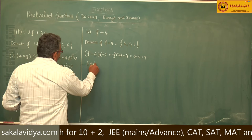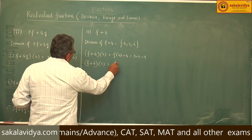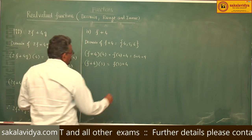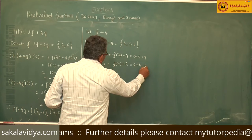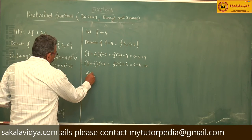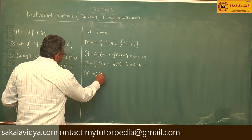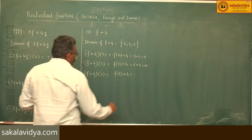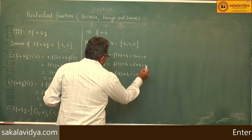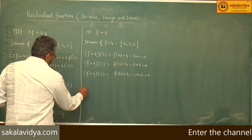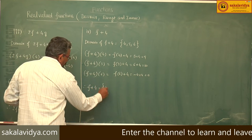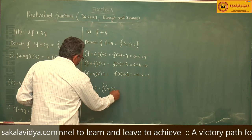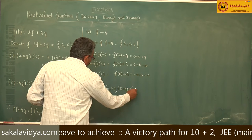f plus 4 of 5: f of 5 plus 4. f of 5 is 6, so 6 plus 4 equals 10. Next, f plus 4 of 6: f of 6 plus 4. f of 6 is minus 4, so minus 4 plus 4 equals 0. Therefore, f plus 4 is defined as the set {(4, 9), (5, 10), (6, 0)}.